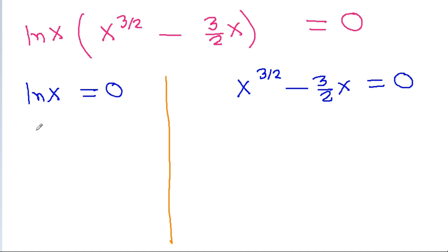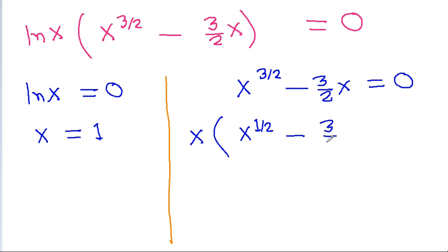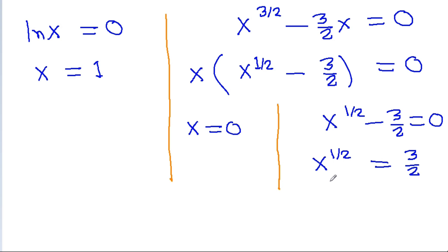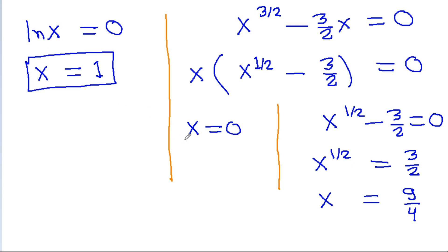From ln x equal to 0, we get x is equal to 1. From the other factor, if we take x common then we get x power 1 by 2 minus 3 by 2 is equal to 0, so either x is equal to 0 or x power 1 by 2 is equal to 3 by 2. If we square both sides then we get x is equal to 9 by 4. So we get three values of x: x is equal to 1, x is equal to 0, and x is equal to 9 by 4.